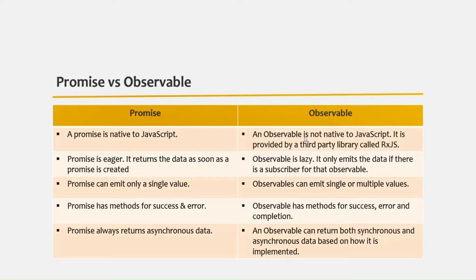Now, a Promise is eager — that means it returns the data as soon as the Promise is created. But an Observable is lazy — it only emits the data if there is a subscriber for that Observable.